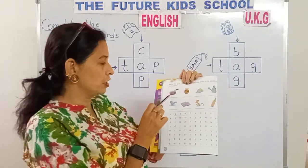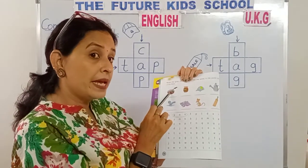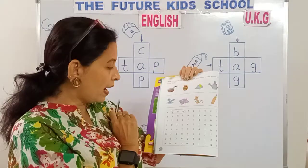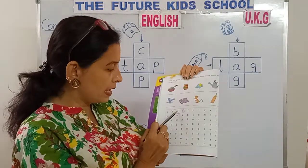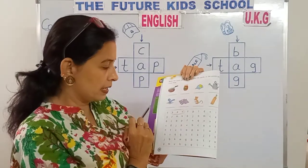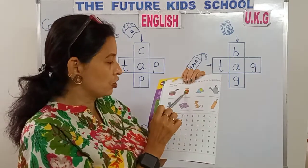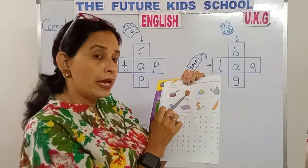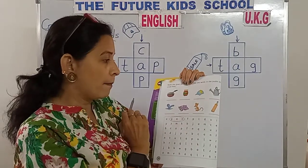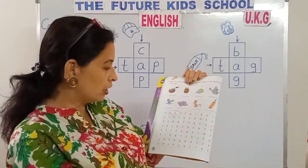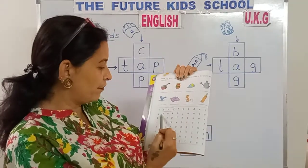Now look here, children. This is a pan. P-A-N. Pan. So in the first line, we've got P-A-N — we need to circle it. Look at the next picture: J-A-M. This is a bottle of jam. Look in the second line, children, if we can find jam.